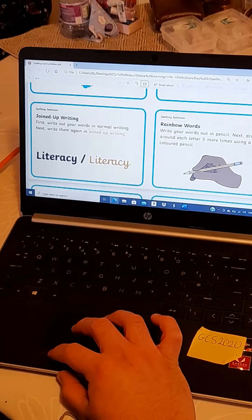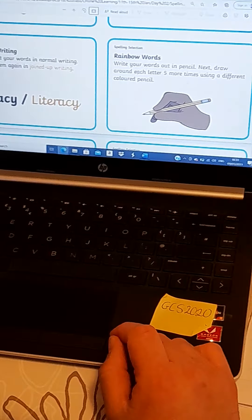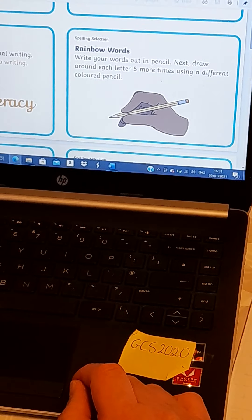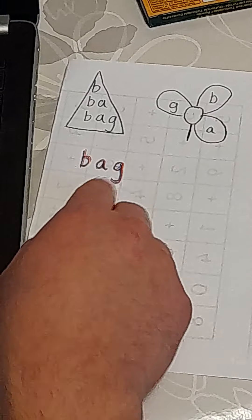Let's have a look at the challenge cards. Some of these we've done in class already. The first one here is rainbow words, so writing out each letter five times. Here it says to draw around each letter five times. I've done it slightly differently. I've just written the word five times, four times already.